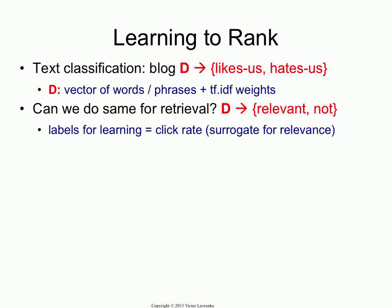The answer is it's been tried in the standard way for many, many years, and it never works. The reason it never works is that the feature set you're using here is wrong — it's a feature set that doesn't allow you to learn effectively. Basically, I can't use words and phrases as components of my vector. I could use them for classification, but I can't use them to predict relevance.